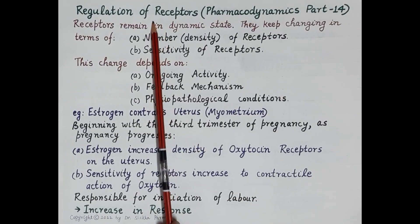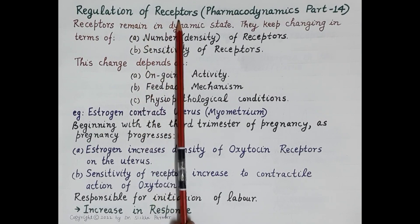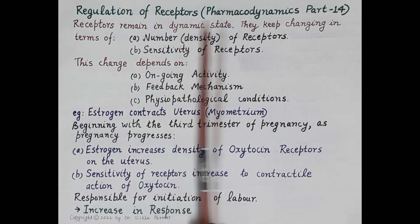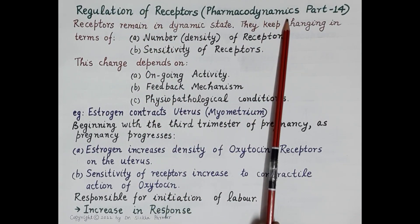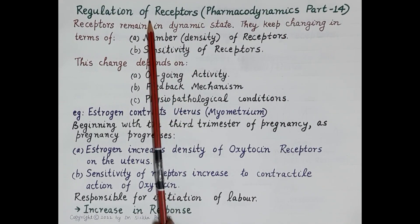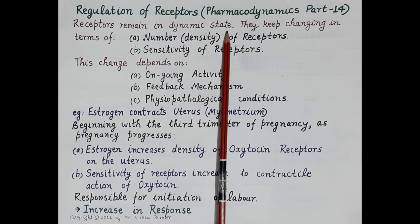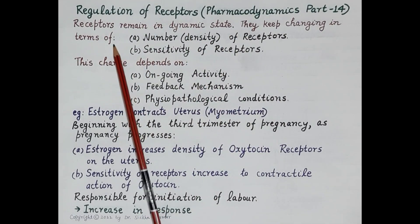In today's video we are going to study the topic regulation of receptors. This is the 14th video in the series on pharmacodynamics. Regulation of receptors is a homeostatic increase or decrease in the number and activity of receptors as per the requirement of the body. The receptors remain in a dynamic state and keep changing.